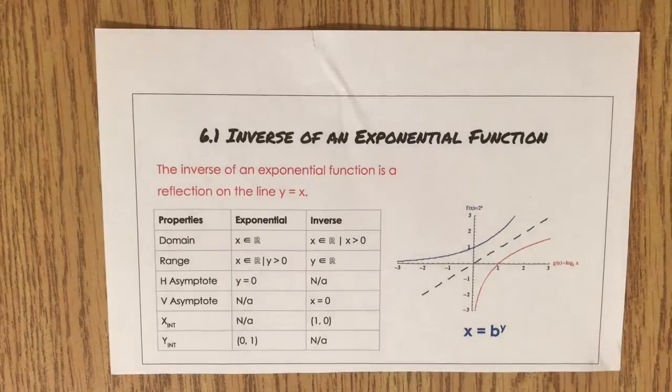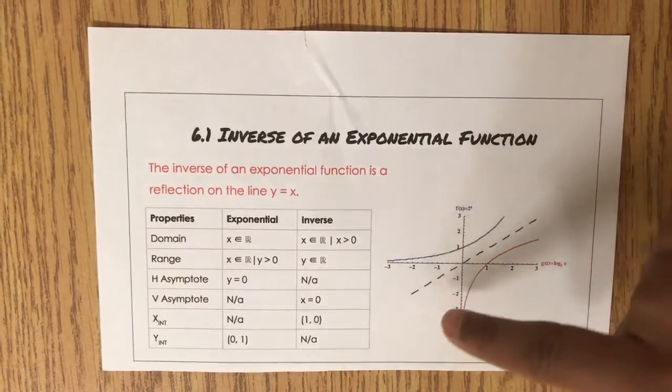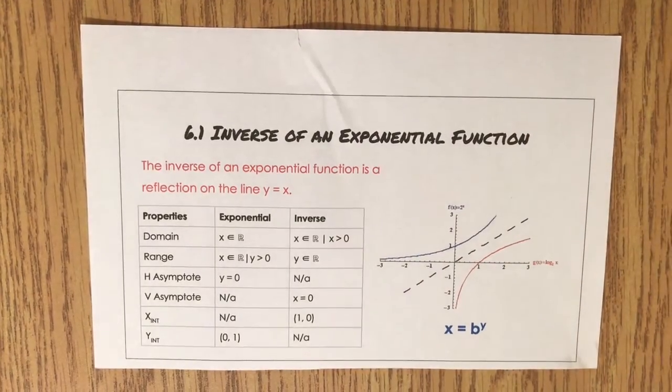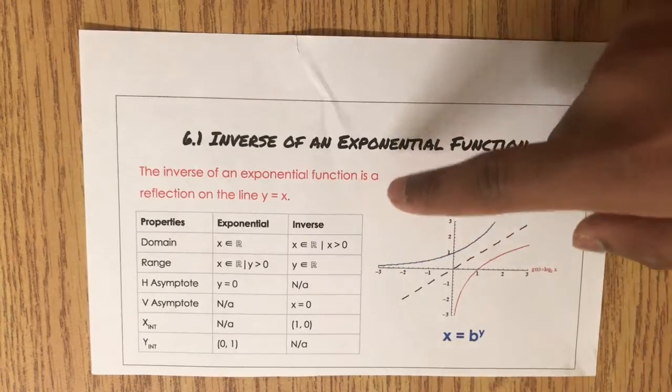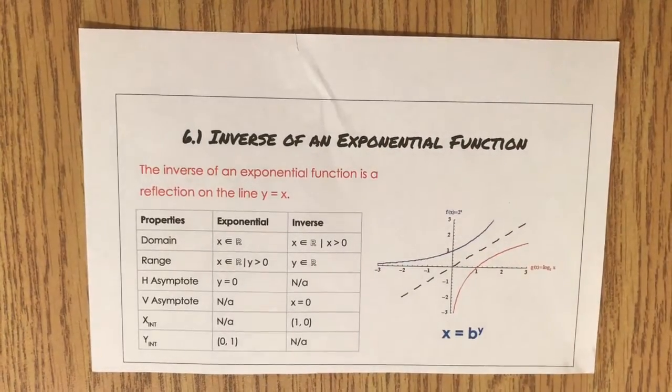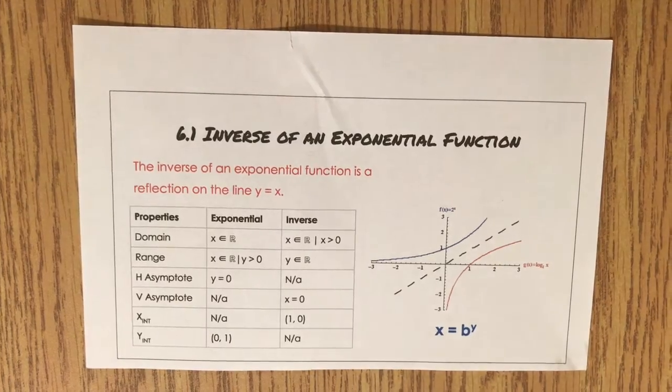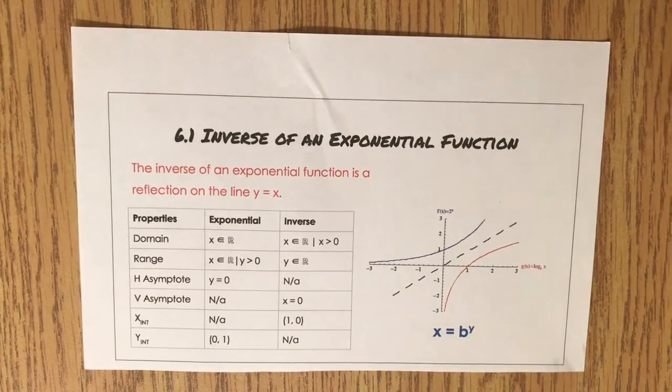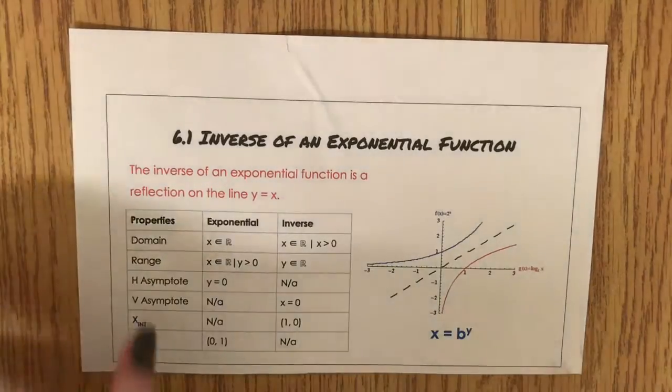In section 6.1, we covered exponential functions and their inverse. The inverse of an exponential function is a reflection on the line y equals x. The inverse function has a domain of x is greater than 0 and y is an element of all real numbers. Exponential functions have a horizontal asymptote and no vertical asymptote, whereas its inverse is vice versa. This also goes for their x and y intercepts.